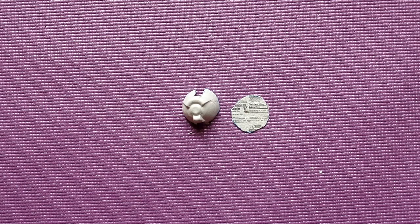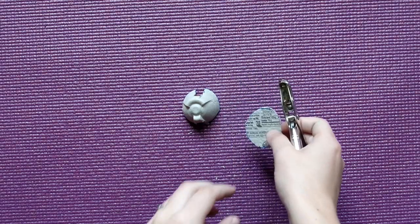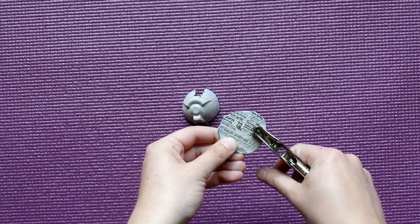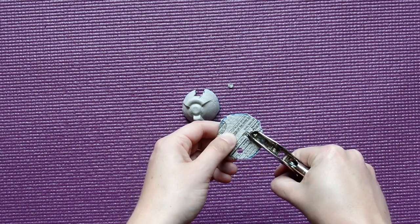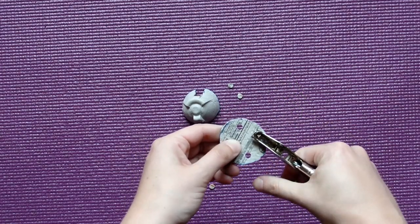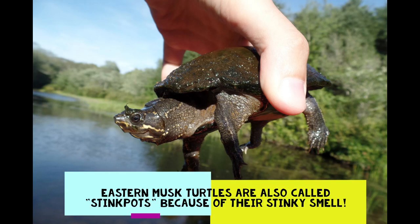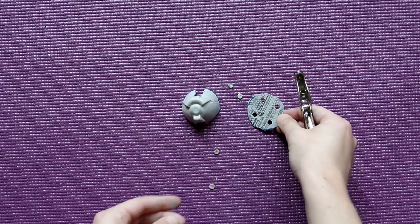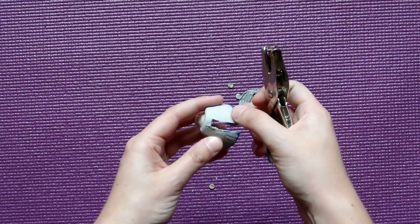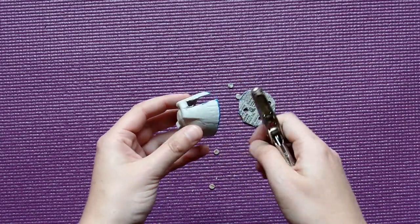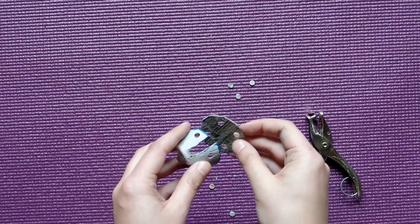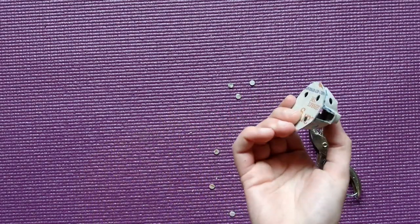Now we're going to use our hole punch to punch the holes that will attach our carapace to our plastron. So I'm going to just punch four holes, two in the front and then two in the back and then the same thing I'm going to do right on my carapace so two on either side of the front slot and two on either side of the back slot. We'll just make sure our holes match up. Looks pretty good.